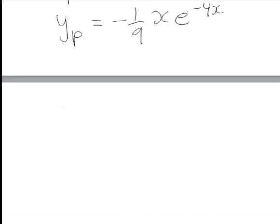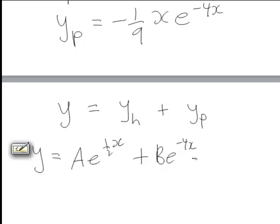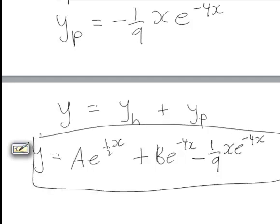The general solution to such a DE is y equals yh plus yp. Hence in this case we obtain y equals ae to the half x plus be to the negative 4x, which was our expression for yh, minus one ninth x e to the negative 4x. This is the general solution.